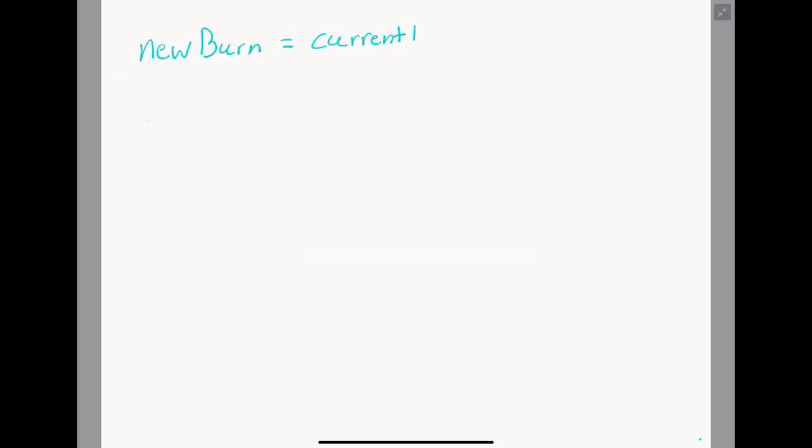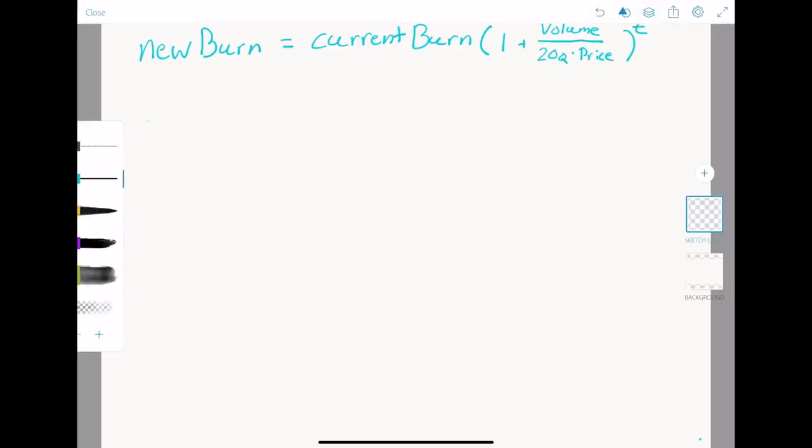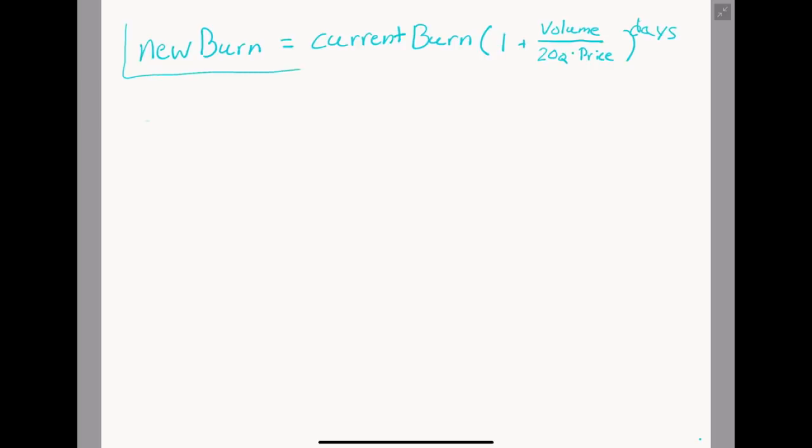Let's substitute this back into our compound interest equation to see that the new burn is equal to the current burn times 1 plus volume divided by (in parentheses) 20 quadrillion times price. All of that raised to the number of days that we will be evaluating this equation for. So if we're doing a month, days would be 30. If we were trying to see the answer in a year, days would be 365. We now have a fully functional equation to model how the burn will compound over the next few years or months or however long you want to look. Feel free to manipulate this equation and isolate variables. It'll give you a lot of insight into how SafeMoon works at a core level. But that is out of scope for this video, so I'll just continue with the burn.